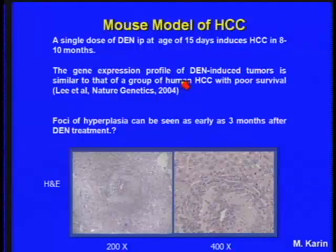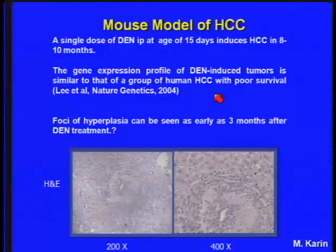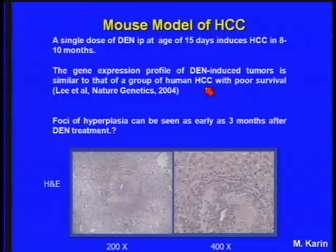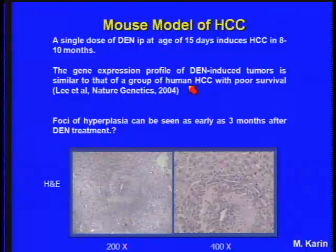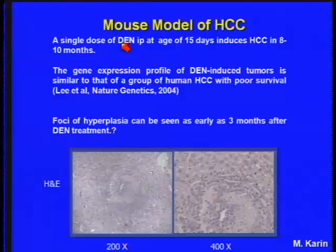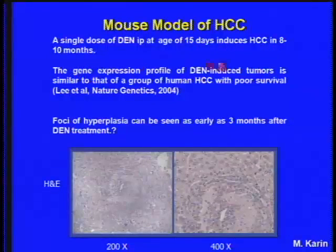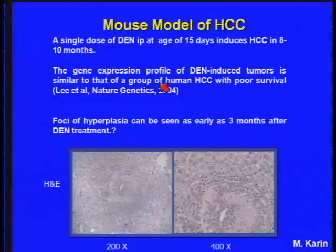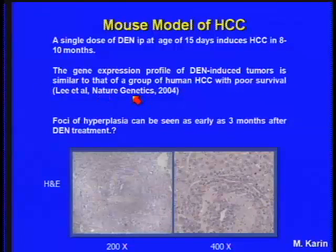Does this have any effect in terms of tumorigenesis in the animal? These are studies from Michael Caron, which appeared in Cell earlier this year. We're part of a mouse model and human cancer consortium, studying the effects of diet on tumor progression with Randy Seeley and David Huey at the MDI. This model is a DEN model — diethylnitrosamine — injected into animals at about 15 days, which induces HCC in about 8 to 10 months. The gene expression profile is very similar to a group of human HCCs with very poor survival, from work from Snorri Thorgensen's lab at NCI.